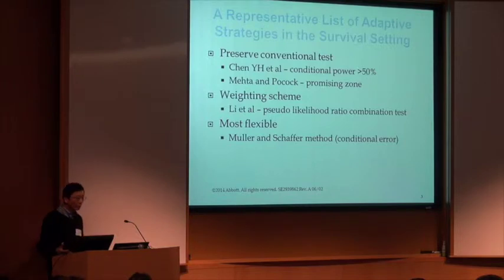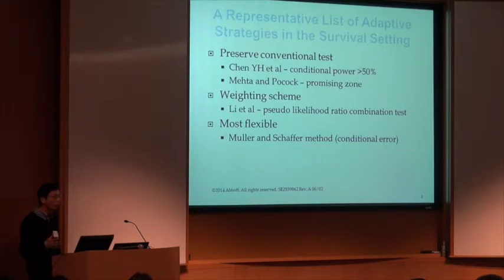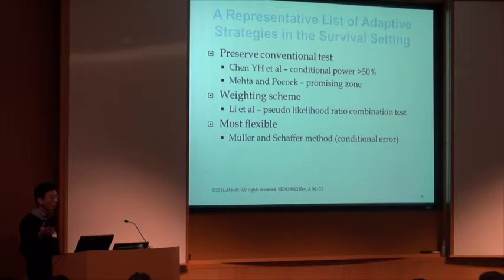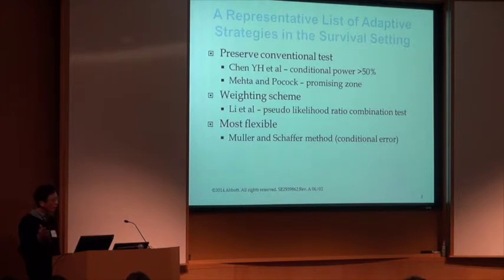The most flexible method is the Mueller-Schaefer method, based on conditional error rather than conditional power. It can have multiple stages, but generally we deal with two stages. We get some interim result, then modify the boundary for the second stage. We can even modify the endpoint and the population to have a more enhanced population. In general, we try to keep it consistent between the first and second stage, because even though statistically it may make sense, clinically it may not if too many changes are made.